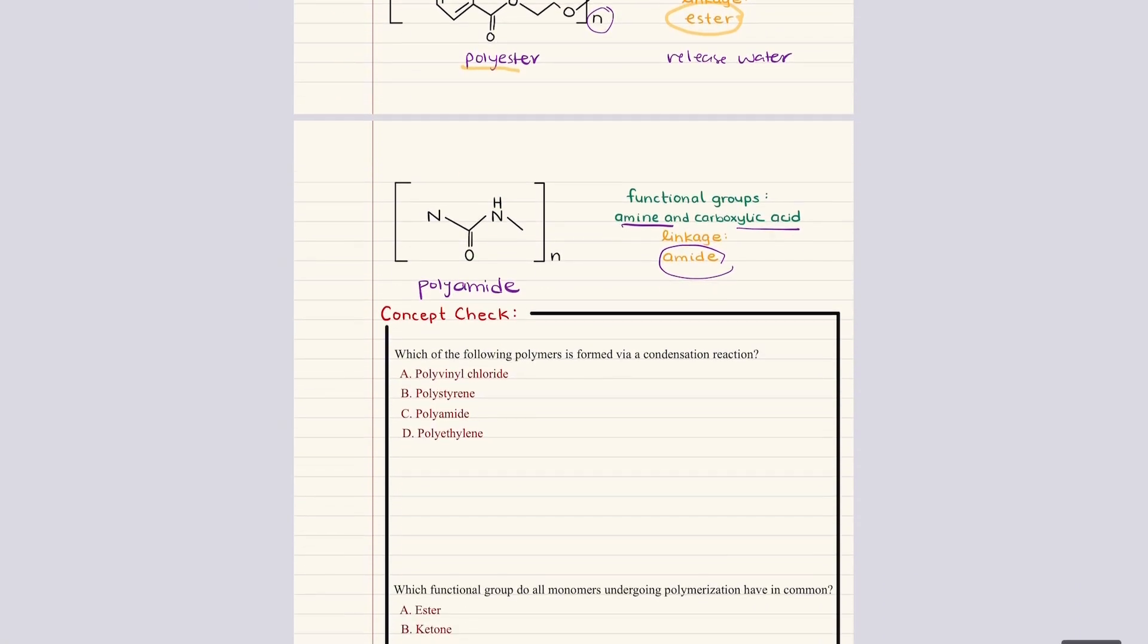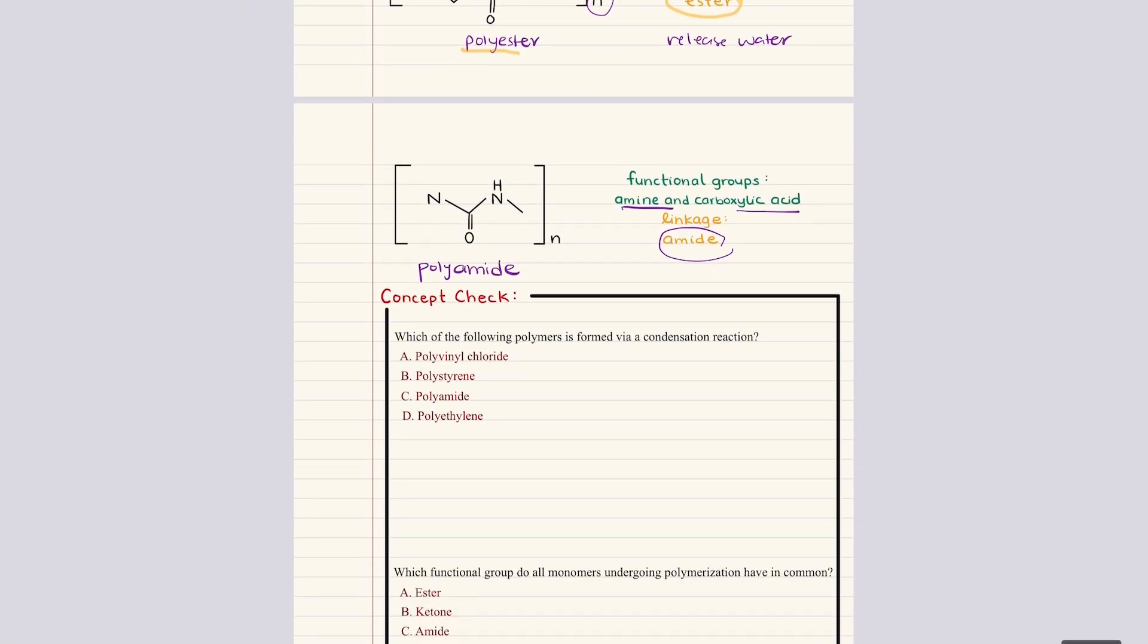In the second example, we see a polyamide where an amine reacts with a carboxylic acid to form amide linkages. This type of polymerization is fundamentally the same chemistry that produces proteins in biological systems, where you'll see amino acids link together through amide bonds known as peptide bonds. And recognizing that pattern really helps students connect organic chemistry to both biological and industrial applications.